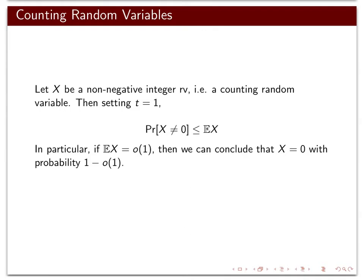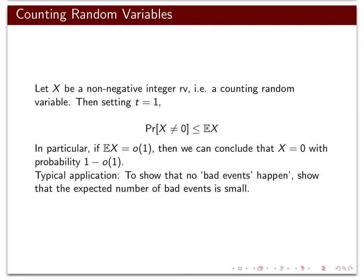Often we're talking about a situation where we have some parameter n going to infinity, and we can conclude that if the expectation of x tends to zero, then the probability that x equals zero tends to one — the probability x doesn't equal zero tends to zero. Usually x is the counting random variable for the number of bad events that happen, and we want to show that with high probability no bad events happen. We show that the expected number of bad events tends to zero, which implies the probability that no bad events happen tends to one.